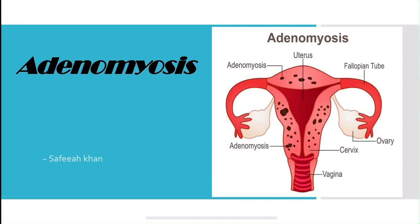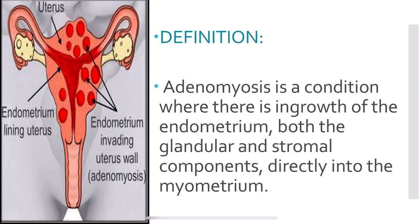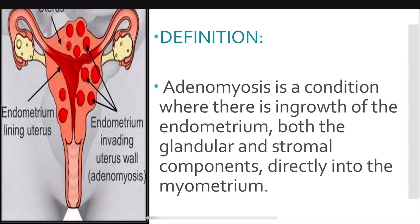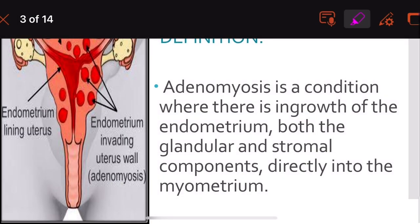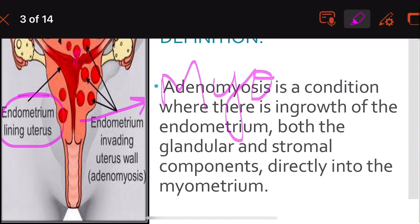In this video we are going to discuss adenomyosis. Adenomyosis is a condition where there is ingrowth of the endometrium — both the glandular and stromal components — directly into the myometrium. The glands and stromal components of the endometrium directly enter into the myometrium, and this condition is known as adenomyosis.